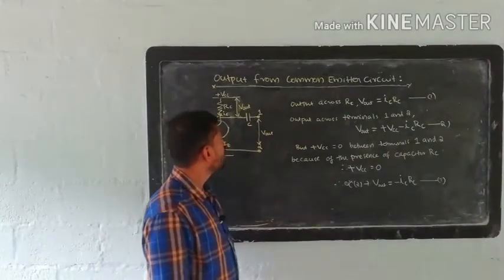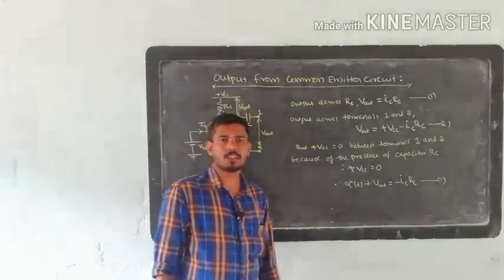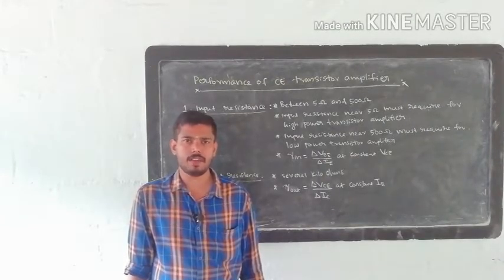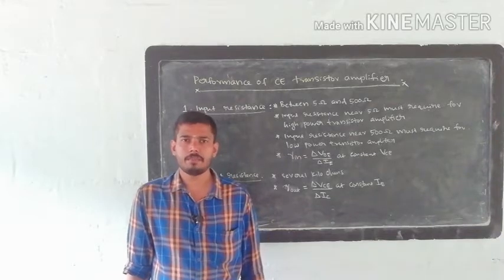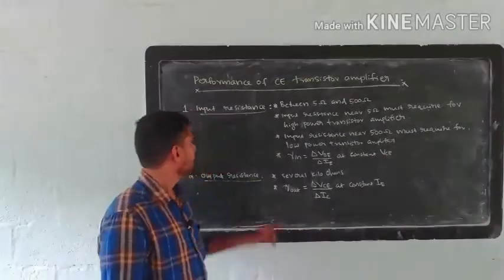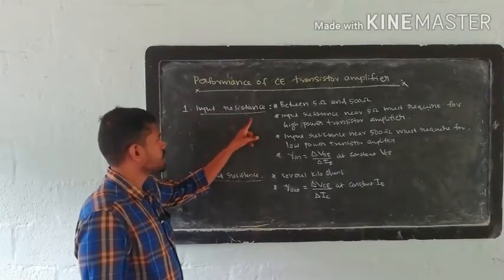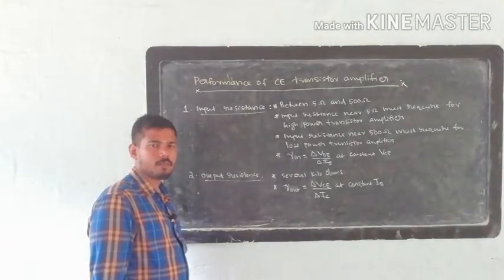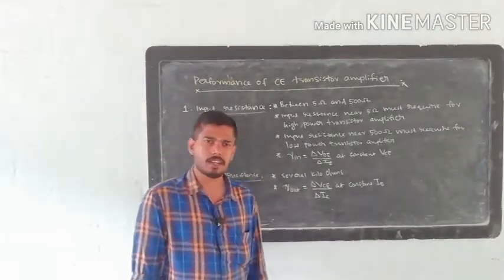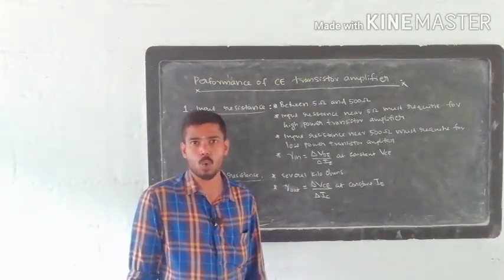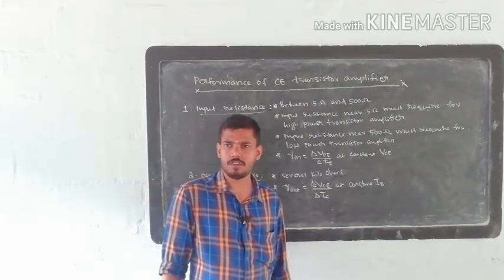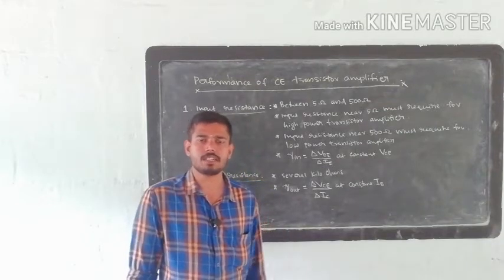That is all about output from the common emitter transistor circuit. Next, performance of a common emitter transistor amplifier. The performance and influencing factors: now, input resistance. The base emitter junction is forward biased, so input resistance is very small.